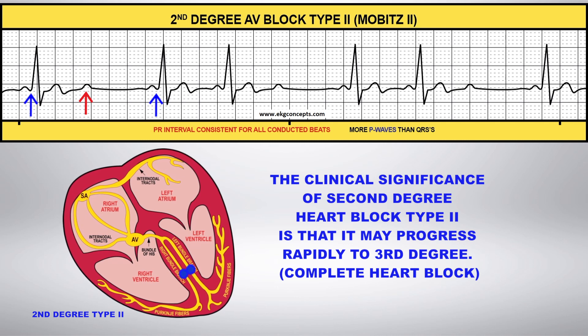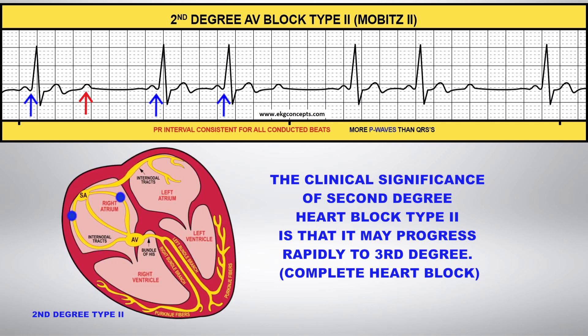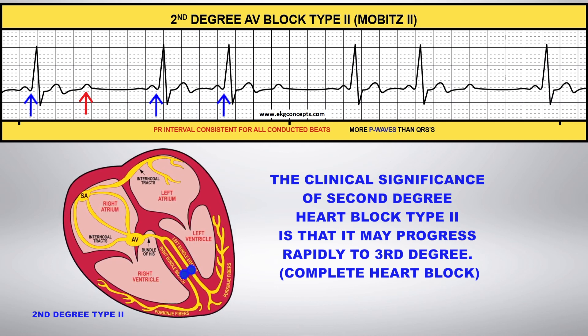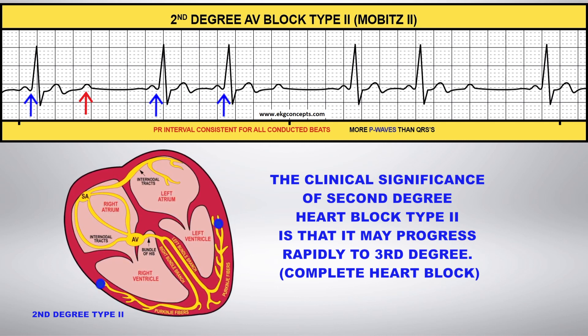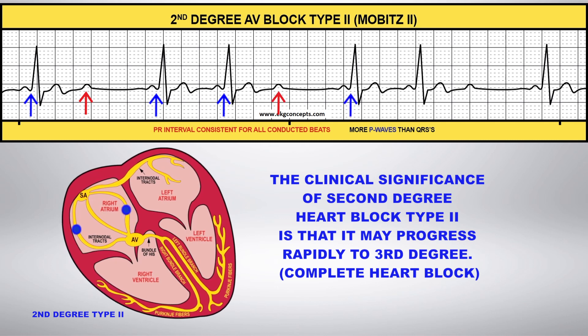In this example, the conducted beats are illustrated by the blue arrows, and the non-conducted beats — or the P-waves without a QRS — are illustrated by the red arrows.